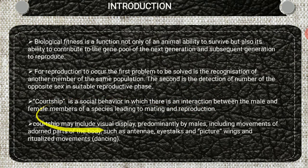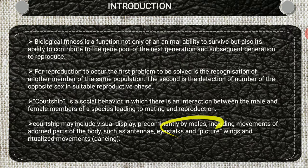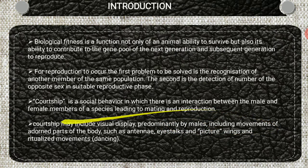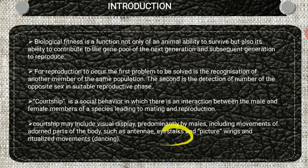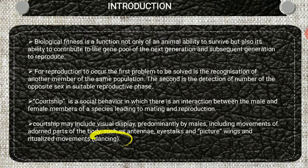Courtship includes visual displays, predominantly by males, including the movement of body parts such as antennae, eye stalks, wings, and dancing.